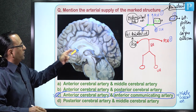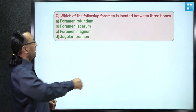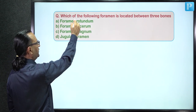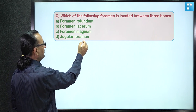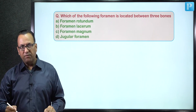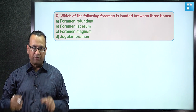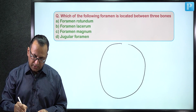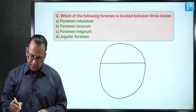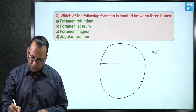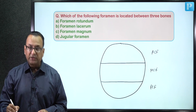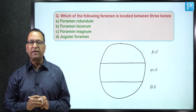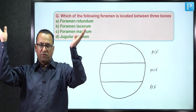This question asks which foramen is located between three bones, from among foramen rotundum, foramen lacerum, foramen magnum, and jugular foramen. Looking at the cranial fossae from above with the brain removed, there are three fossae: anterior, middle, and posterior. The sphenoid bone has a butterfly shape with a body, lesser wing (floor of anterior fossa), and greater wing (floor of middle fossa).